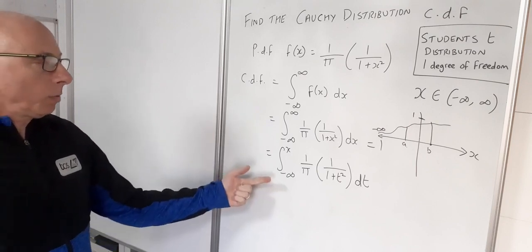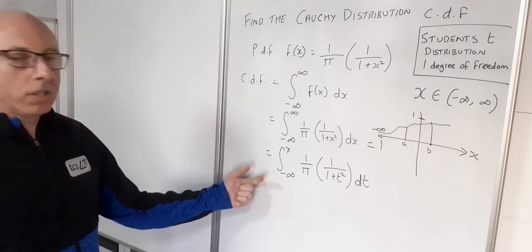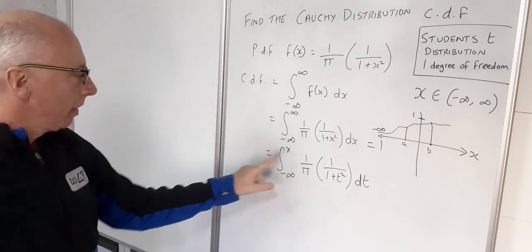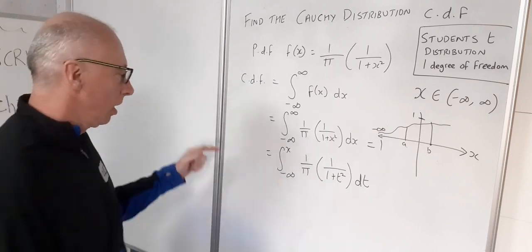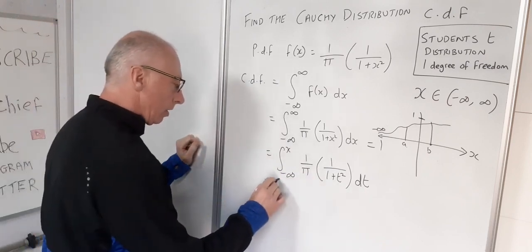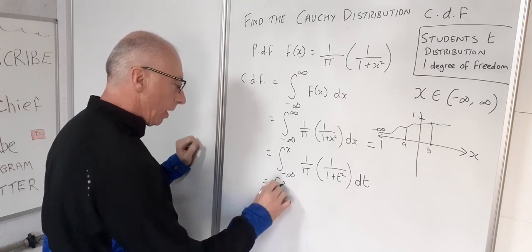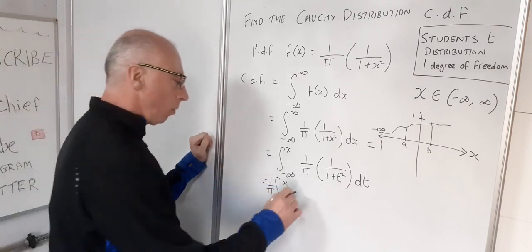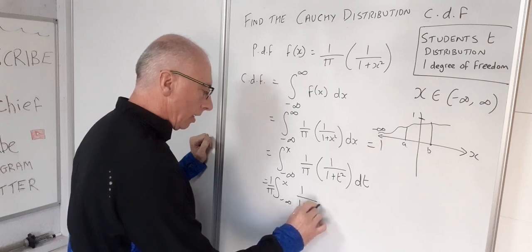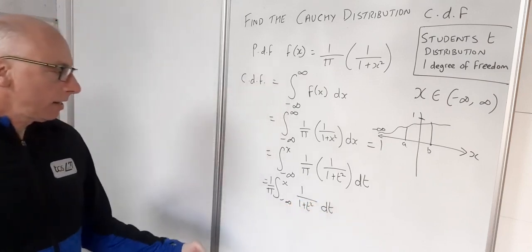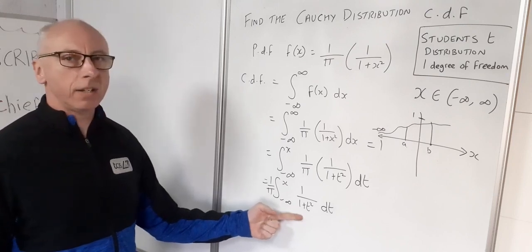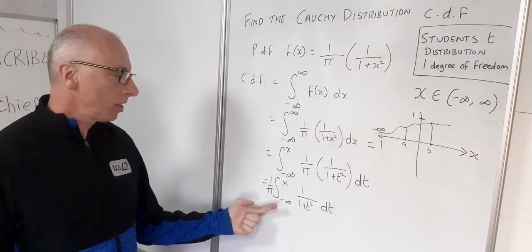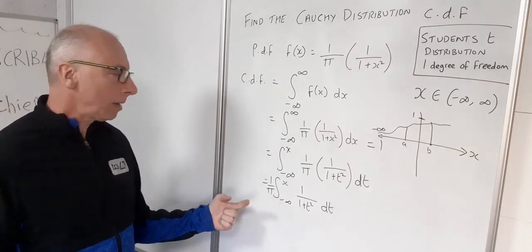Now what we need to do is integrate this and that should give us our CDF. So 1 over pi can come out the front, that's not related to our t. So now we've got negative infinity to x, 1 over pi can come out to the front and then we've got this function here 1 over 1 plus t squared. That is a nice integral for us to do because that's a standard integral. We know that is the arc tangent function.